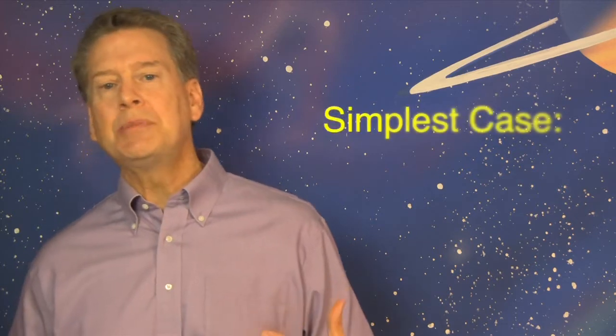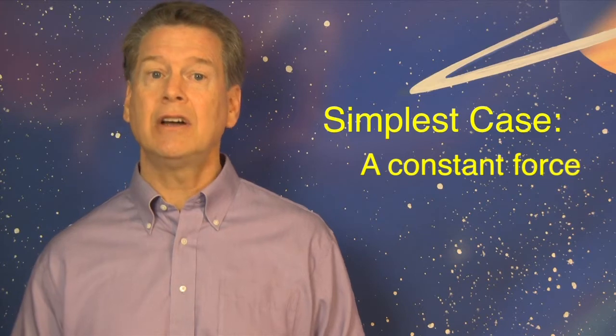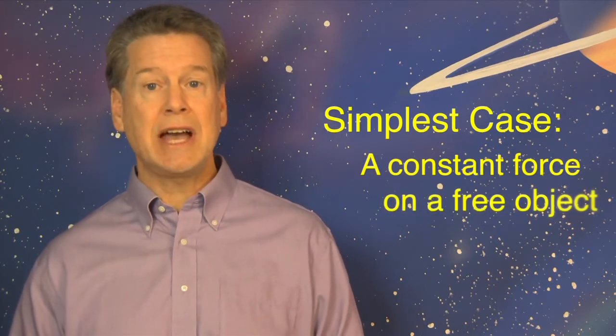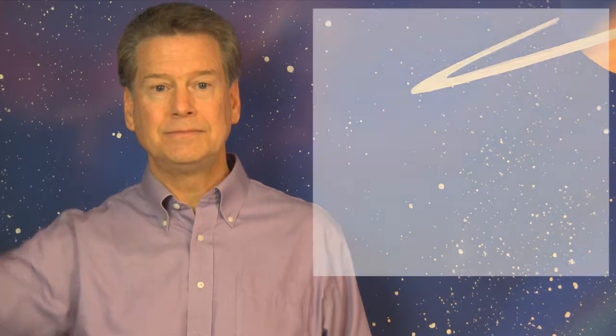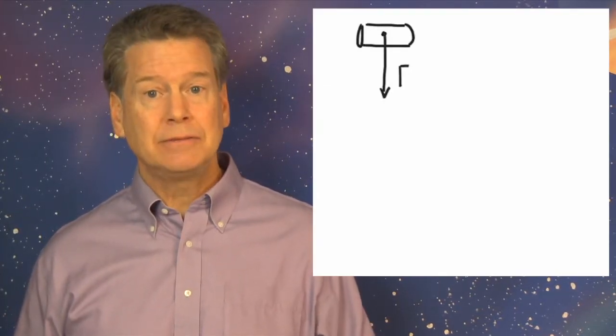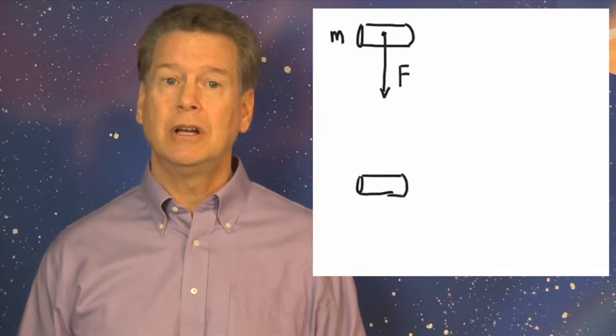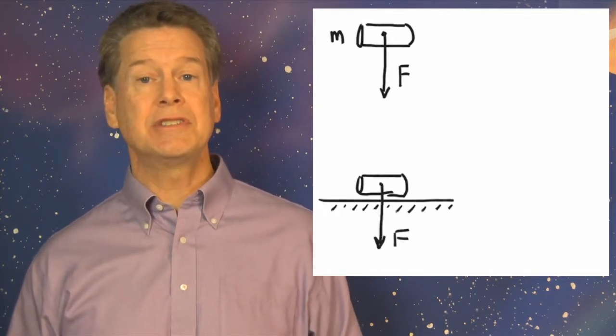Consider the simplest case of a force doing work—a constant force acting on a free, that is, unattached object that is initially at rest. For example, let gravity act on a mass over a short distance near Earth's surface (pretend Earth is down there) and ignore the tiny effect of air resistance. The force of gravity F does work W on mass M through a distance d.